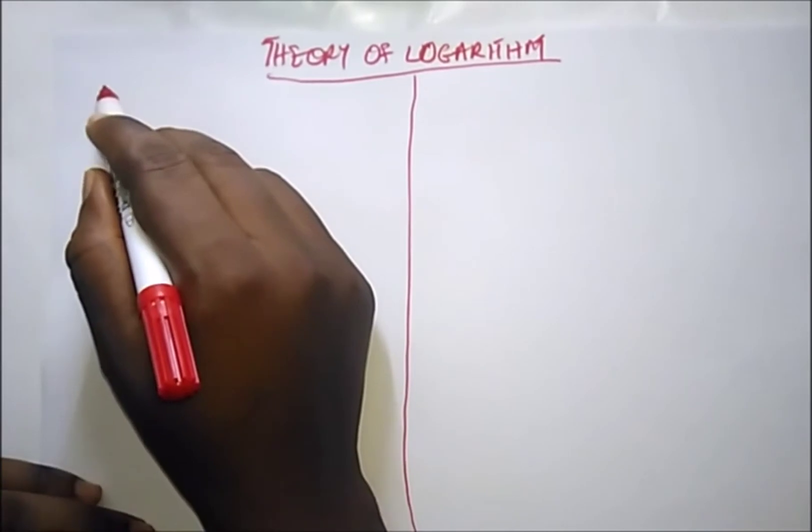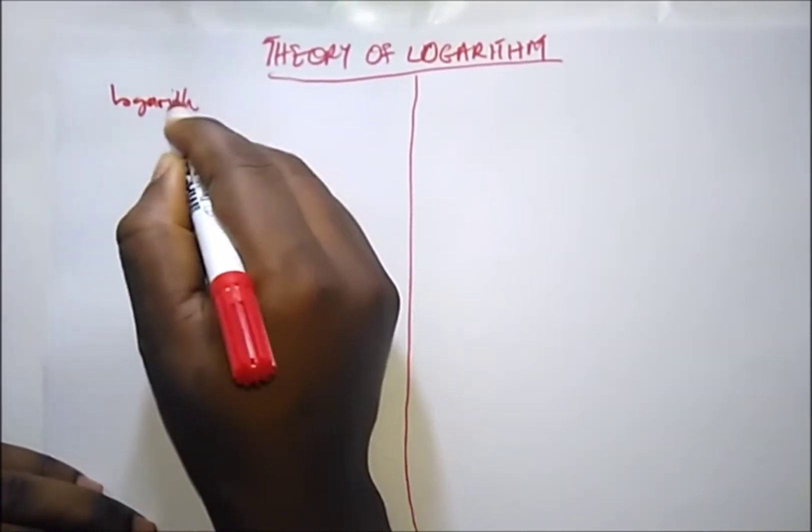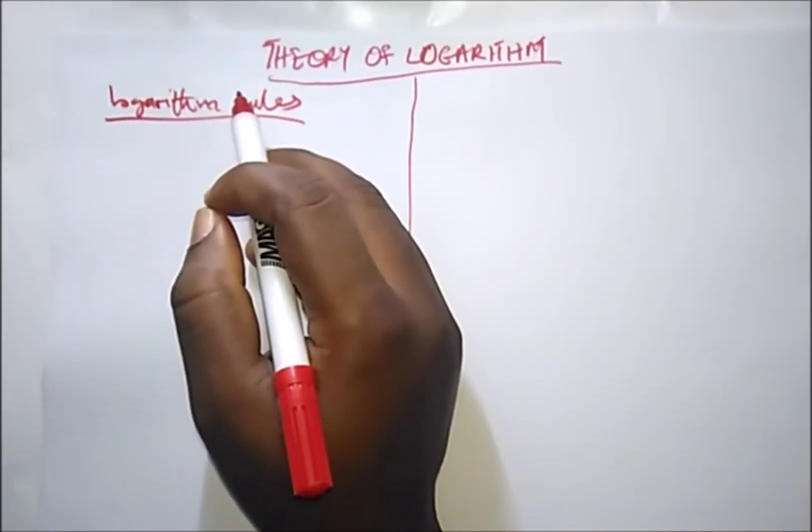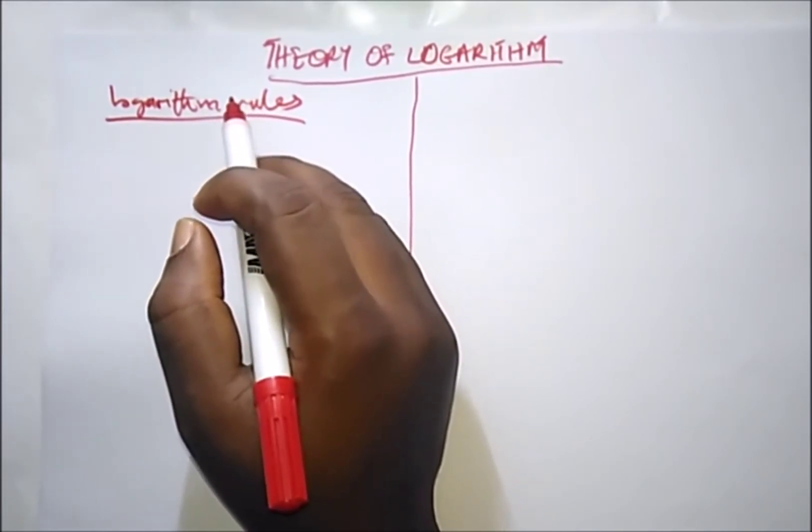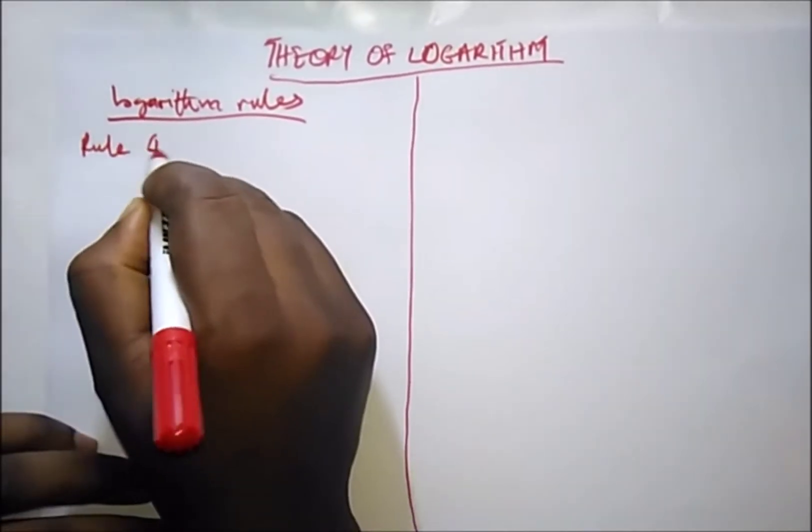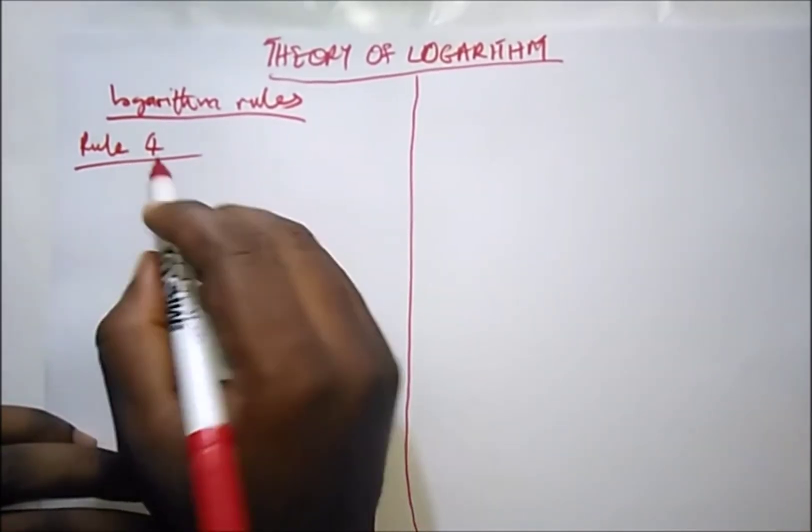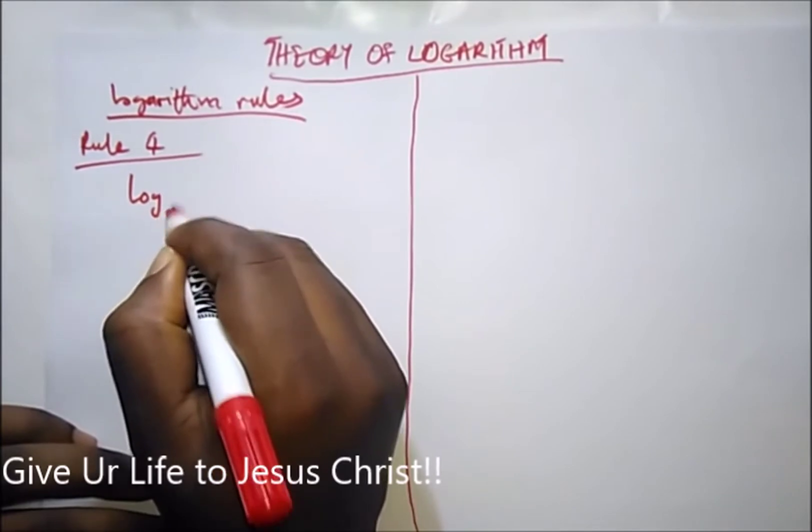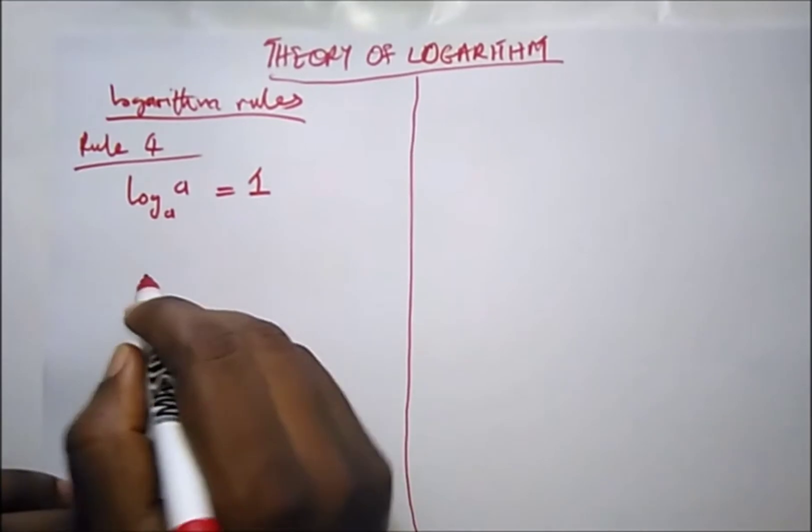Now we have logarithm rules. These are rules guiding the operations between numbers such as multiplication, division, power, and change of base. Our first rule: a log of a number to the same base is 1. That is, when you have something like log base a of a, it is equal to 1.